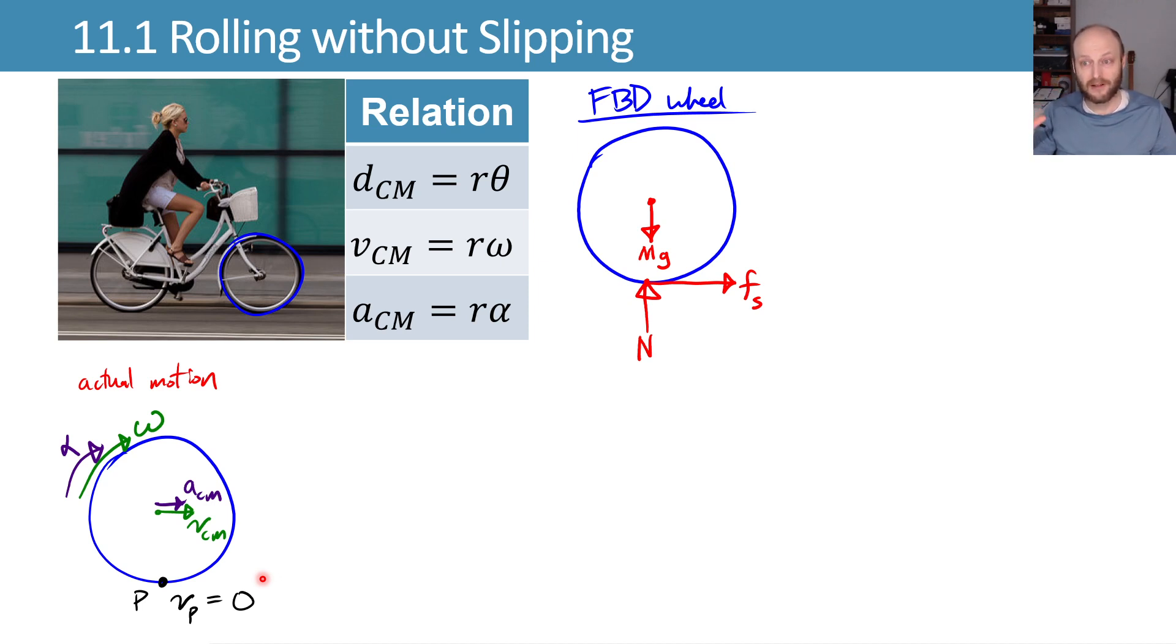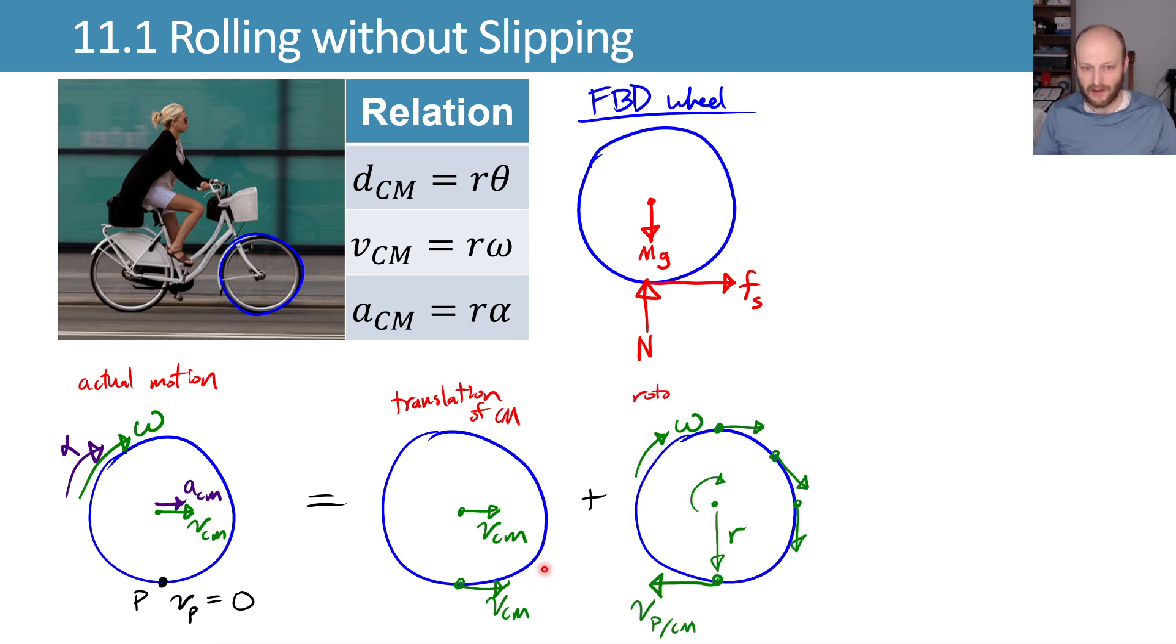We can express that as the combination of a translational motion where we say pretend the wheel is just translating at the speed of the center of mass, combined with a rotational motion where we rotate about the center of mass. So we're breaking our actual motion that has a translation and a rotation in it into separate translation and rotation.